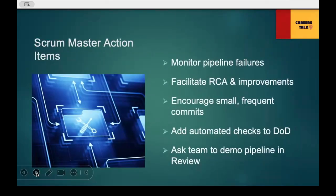What are the Scrum Master's action items? As a Scrum Master, our responsibility is to monitor the pipeline health daily, facilitate root cause analysis, and drive improvement discussions. Encourage small, frequent commits to reduce risk. Ensure that the Definition of Done explicitly includes automated checks. During sprint reviews, request the team to demo the pipeline as part of the working increment. This makes you a DevOps-aware Scrum Master — a strong skill in the industry today.